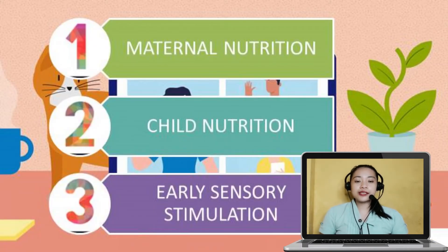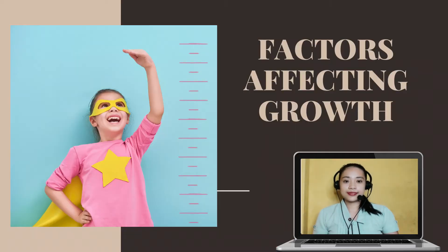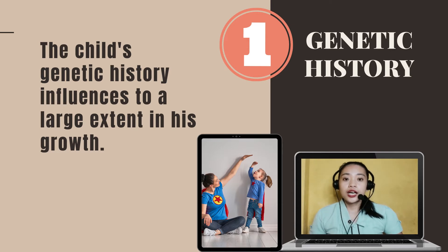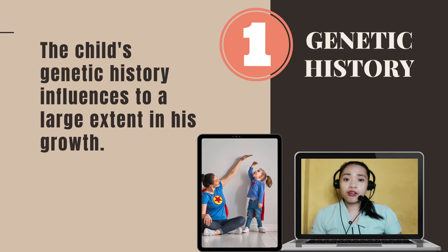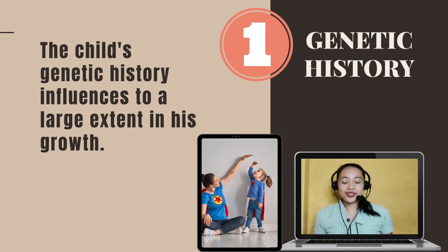To recap, we have three factors affecting development: maternal nutrition, child nutrition, and early sensory stimulation. Now let's move on to the factors that affect growth. We actually have six factors. The first one is genetic history. According to Lane Levitsky, a medical doctor and chief of the Pediatric Endocrine Unit of Massachusetts General Hospital in Boston, the child's genetic history influences to a large extent his growth. It is number one in the list. By just looking at the parent's height, the rate of growth of the child can more or less be predicted — it's all about the genes.